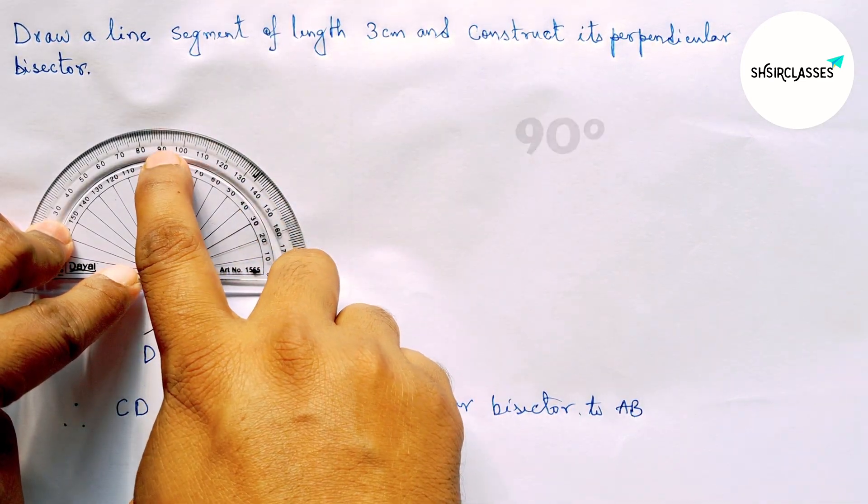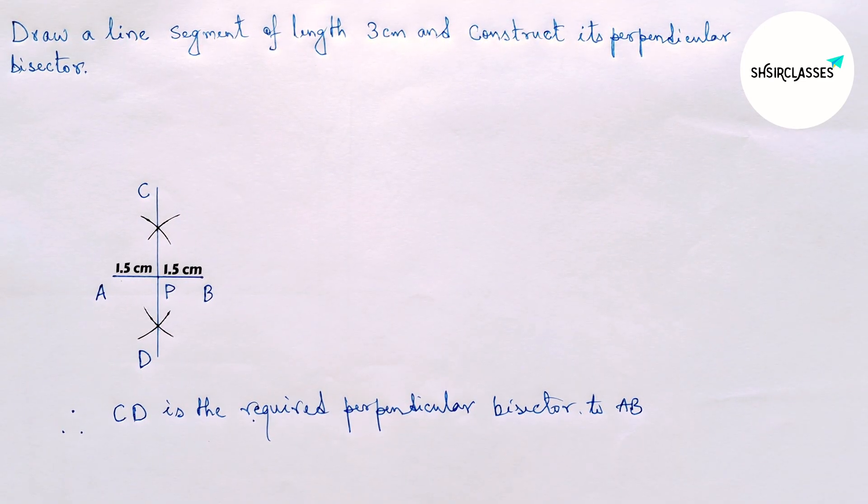This is a 90 degree angle, perfect. So here CD is the perpendicular bisector to the line AB. That's all.